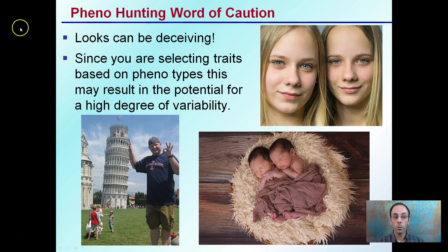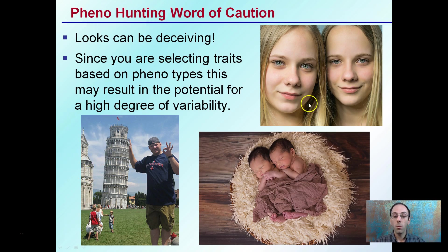However, one word of caution with phenohunting is that looks can be deceiving. Since you're selecting traits based on phenotypes, this may potentially result in a high degree of variability. So even though two things may look the same — as we see here with the Leaning Tower of Pisa and a kind of forced perspective — just because two traits look alike, or we see something that looks like what we want, that can sometimes be deceiving when we go through and propagate or breed it further.